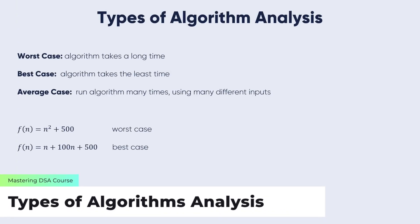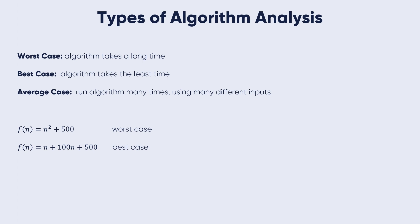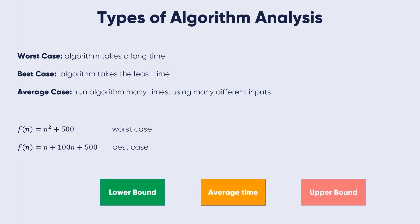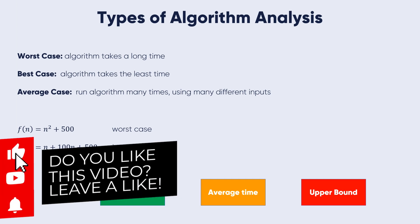To analyze a given algorithm, we need to know which inputs cause the algorithm to take less time and which inputs cause it to take longer. An algorithm can be represented in the form of expressions — one for the case where it takes less time, called the best case, and the other for the case where it takes more time, called the worst case.